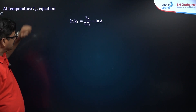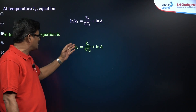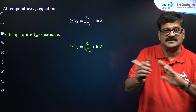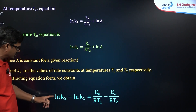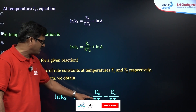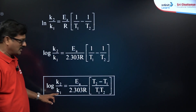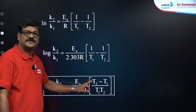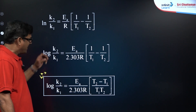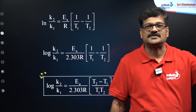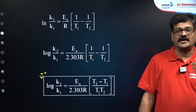At temperature T1: ln k1 = −Ea/RT1 + ln A. At temperature T2: ln k2 = −Ea/RT2 + ln A. Taking the difference between these two equations and manipulating, we get: log(k2/k1) = Ea/(2.303R) × (T2 − T1)/(T1 · T2). This is an important formula — if k1 at temperature T1 is given, you can find k2 at temperature T2. If the reaction is doubled, k2/k1 = 2.